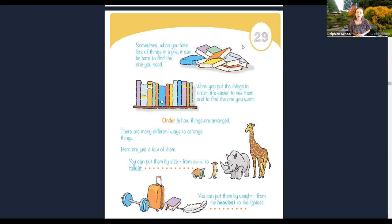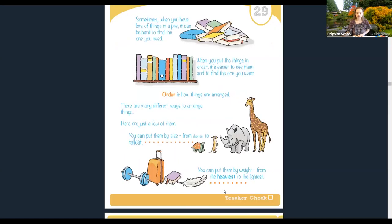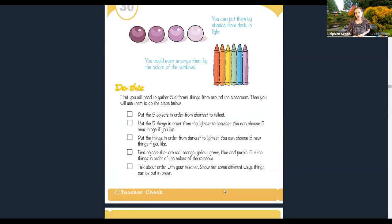Sometimes when you have a lot of things in a pile, it can be hard to find the one you need. When you put things in order, it's easier to see and find what you want. Order is how things are arranged. There are many different ways: by size from shortest to tallest, by weight from heaviest to lightest, by shades from dark to light, or even by the colors of the rainbow.